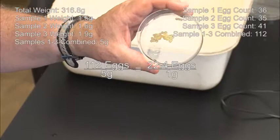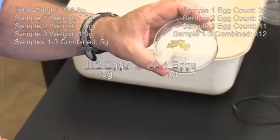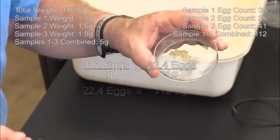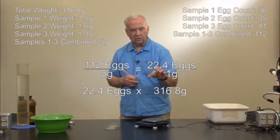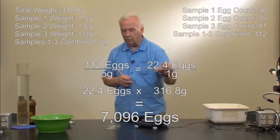Then we'll use that number, calculate the number of eggs per gram, and then calculate based on the total weight of the eggs, then we'll calculate the total number of eggs.